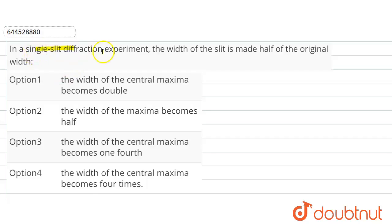In a single slit diffraction experiment, the width of the slit is made half of the original width.